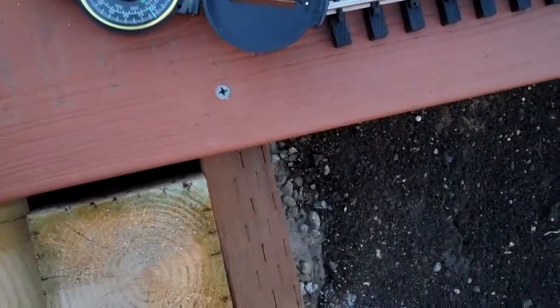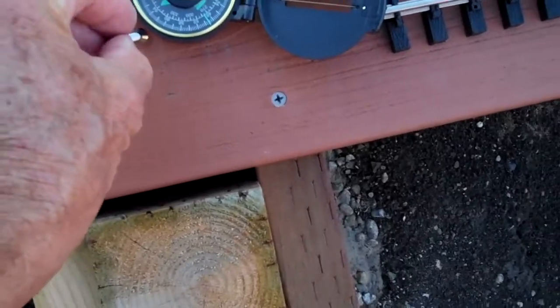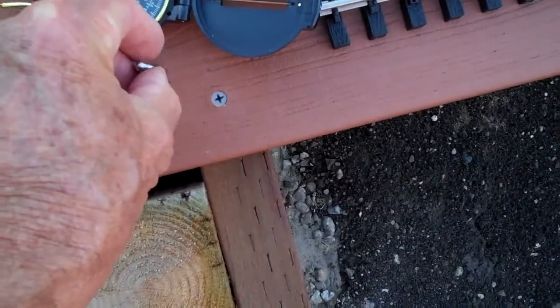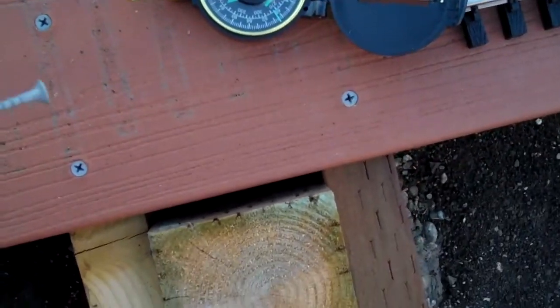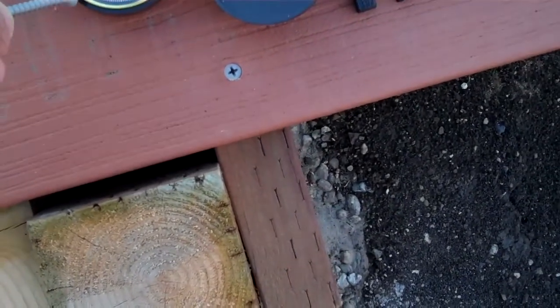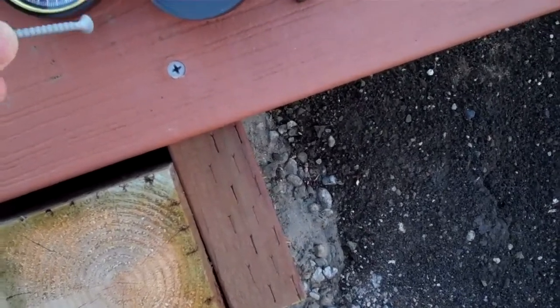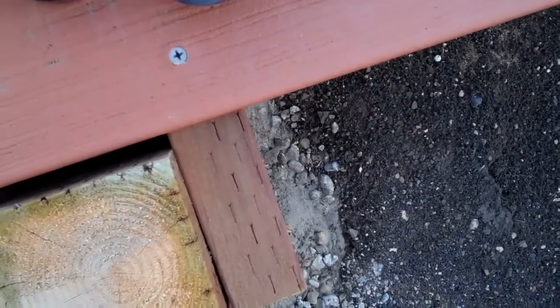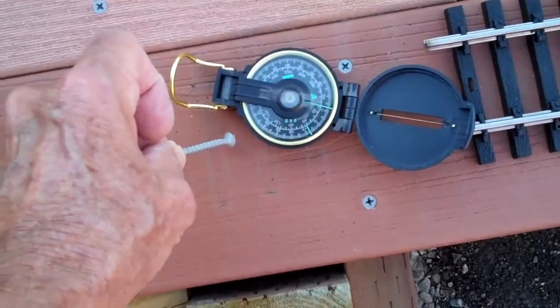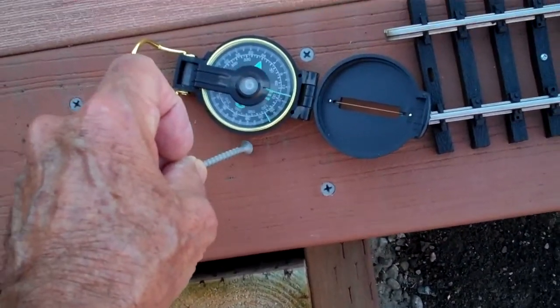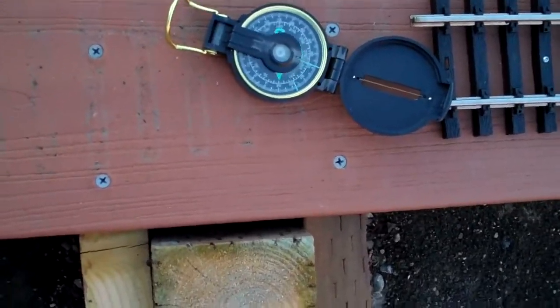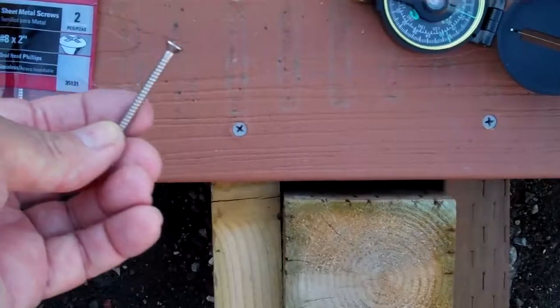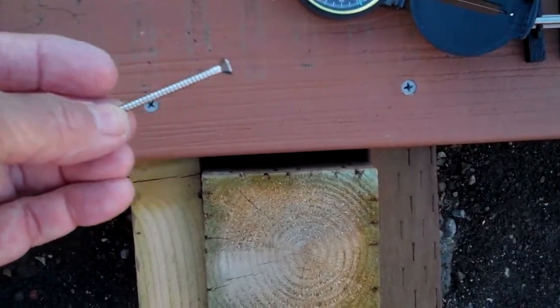For example, if I bring the stainless steel screw up to the compass, it doesn't affect it. Whereas if I take the magnetized screw, you can see it affects it quite profoundly. You can see there, it's turning like a motor. And the non-magnetized stainless steel screw doesn't do that.